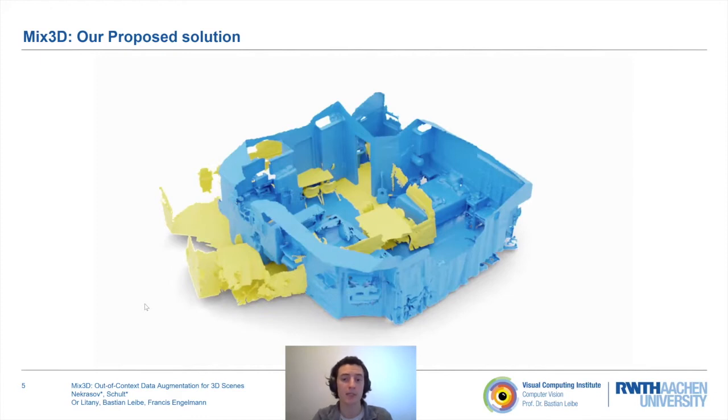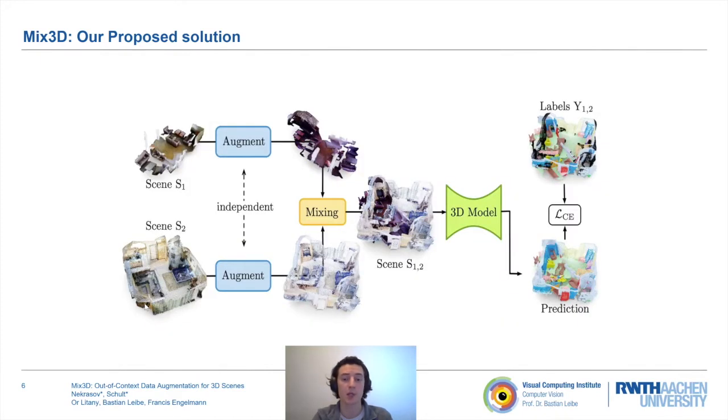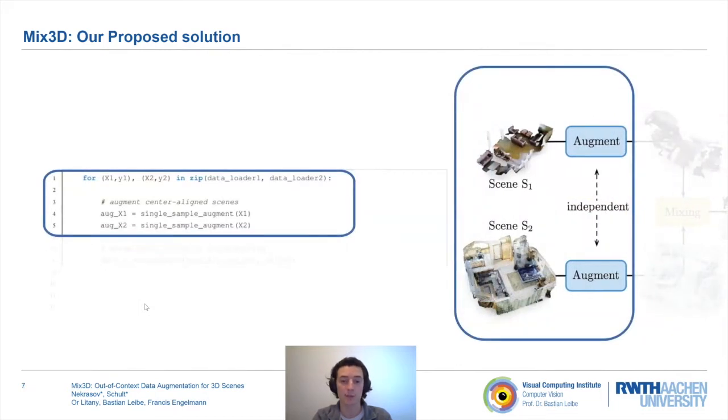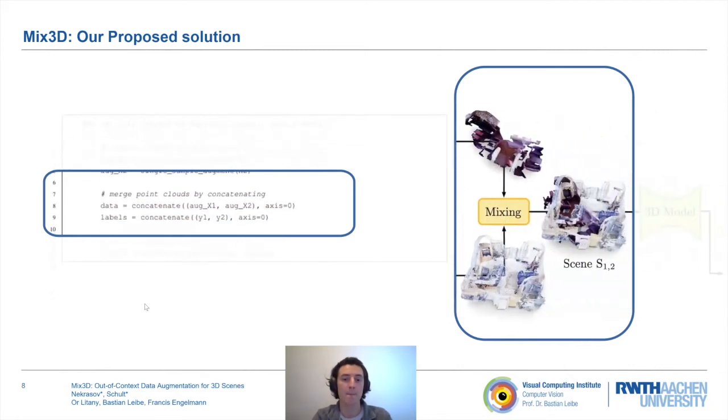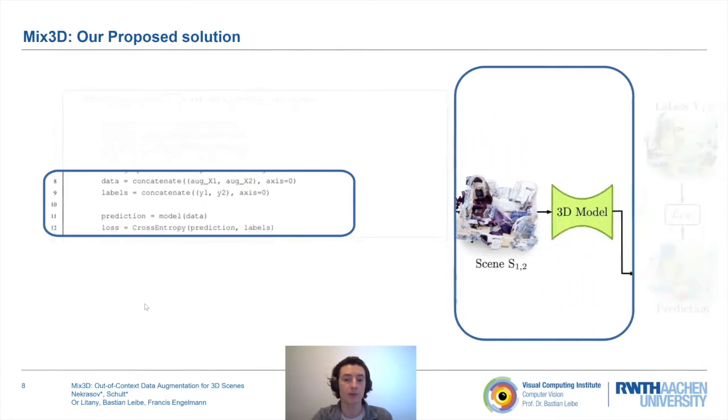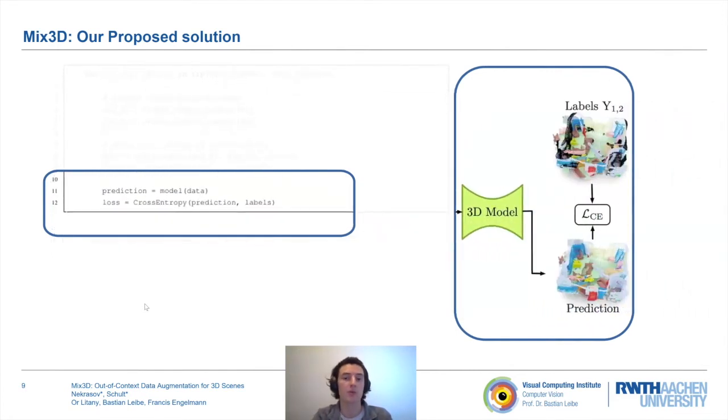Mix3D pipeline is easily incorporated into existing code bases. Instead of feeding a single augmented scene into the 3D model, we augment a second input scene in parallel. Then, we mix them together, or, simply speaking, concatenate augmented points and labels. We then input the resulting mixed scene into the model. For semantic segmentation, we compute the standard cross-entropy loss on the predicted labels of the mixed scene and altered ground-truth labels.